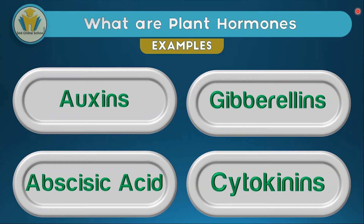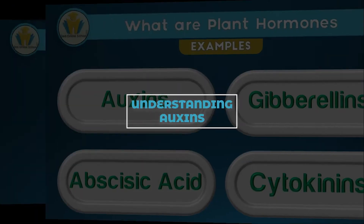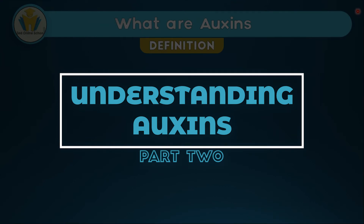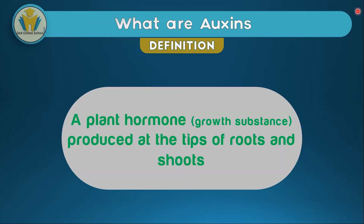Auxins are plant hormones, or simply growth substances, that are produced at the tips of roots and shoots. We can also define auxins as chemical substances produced in plants that encourage growth and development and are produced at the tips of roots and shoots. We can combine the definition of a plant hormone with this simpler description, though we just need to understand that auxins are a plant hormone produced at the tips of roots and shoots.